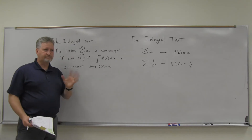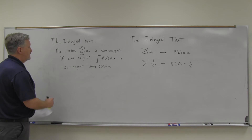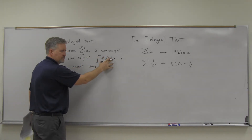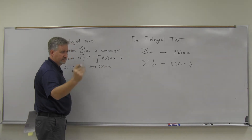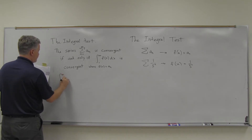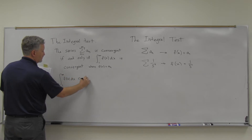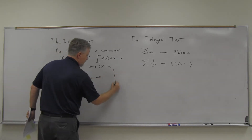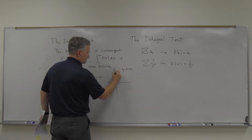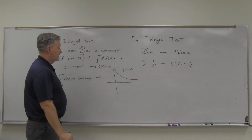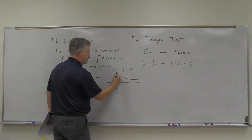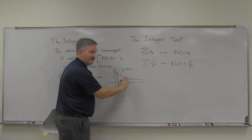Now here's a visualization of this. We talked about the area — what the area represents. The integral represents the area under the curve. So if my y equals f of x has this shape, and the integral from 1 to infinity converges — that area converges. How does the series line up? Here are the rectangles using right-hand endpoints: a1, a2, a3, a4, a5. The heights of the rectangles are the heights of the function.